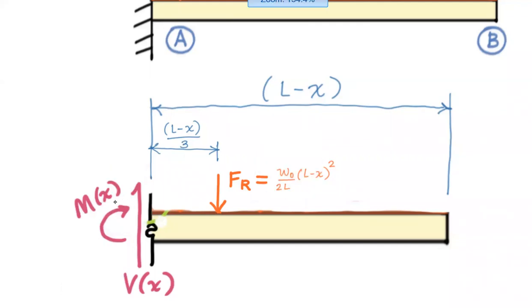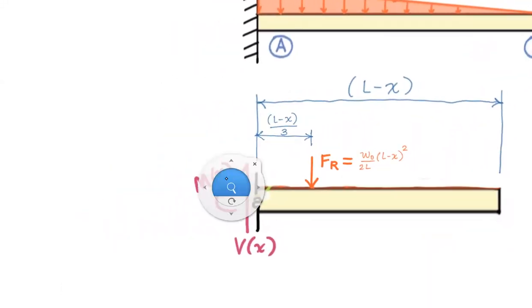We are ready to do our moment summation. So we're going to do summation of moments about the cut is equal to zero. Counterclockwise will be positive. That is our sign convention.